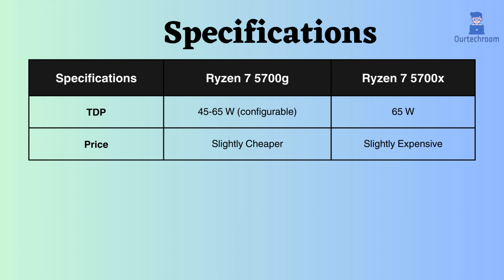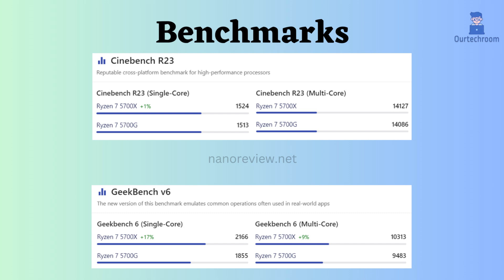If we compare prices, the Ryzen 7 5700X is slightly more expensive than the Ryzen 7 5700G. Looking at benchmark comparisons, according to Cinebench R23 and Geekbench V6, both in single-core and multi-core scenarios, the Ryzen 7 5700X appears to outperform the Ryzen 7 5700G.